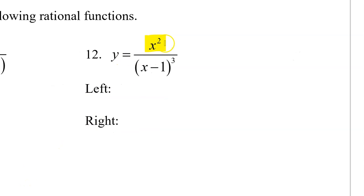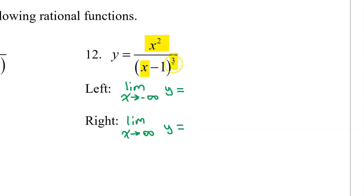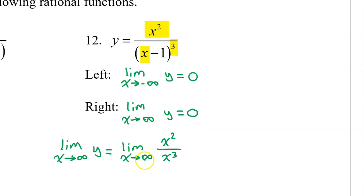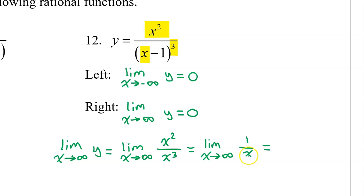For number 12, we only have one term in the numerator, and in the denominator focus on x to the third power. When the degree of the denominator is greater, the function has a horizontal asymptote y equals zero, and that will be the left and right end behavior. For example, the right-end behavior would be the limit as x approaches infinity of x squared over x to the third power. This simplifies down to the limit as x approaches infinity of 1 over x. As x approaches infinity, the denominator gets bigger and bigger, so the value of the fraction gets closer and closer to zero.